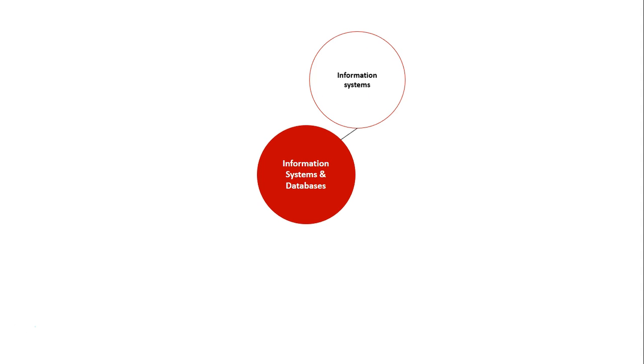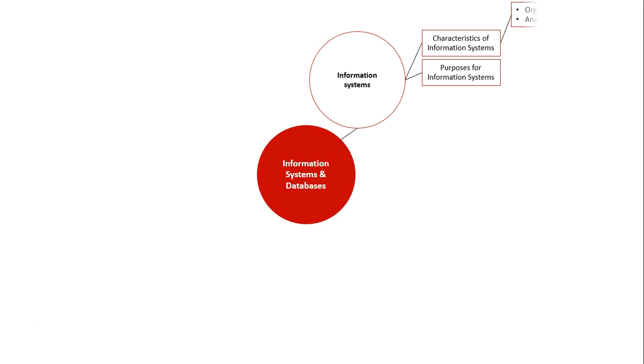At its core, we're talking about databases and how basically databases can be the backbone of a lot of information systems, storing all the data about various components of the information system. We look first at information systems themselves, specifically the characteristics of an information system and the purposes of an information system, which we use as a guideline to understand what the information system is all about.